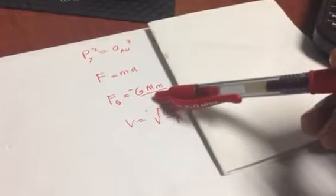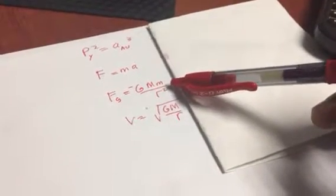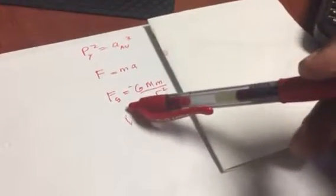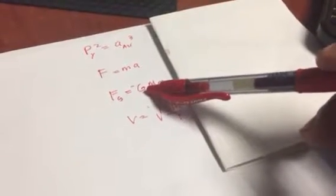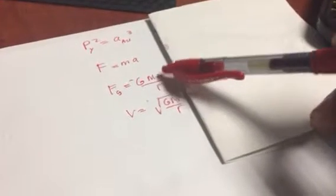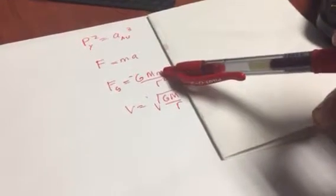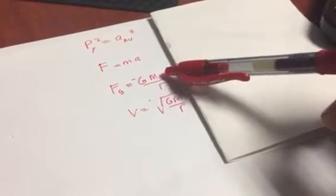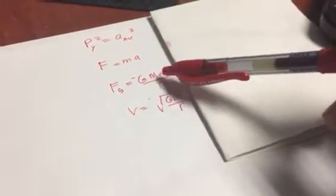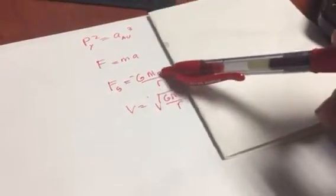The third one is the law of gravity. This has also been credited to Isaac Newton, where the force of gravity is equal to the negative of some value G multiplied by M, which is a mass, multiplied by m, which is another mass, divided by R squared, which is going to be the distance in between these masses M and m.